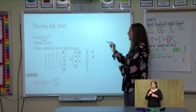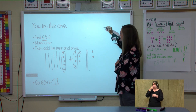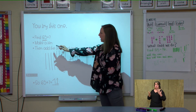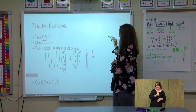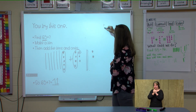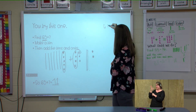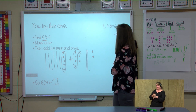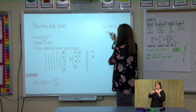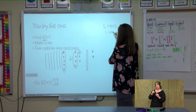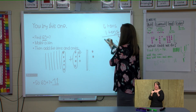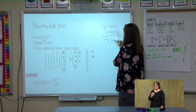Sometimes you might see it like this — you might see your tens and your ones added together. So you would see six tens plus one ten equals seven tens.